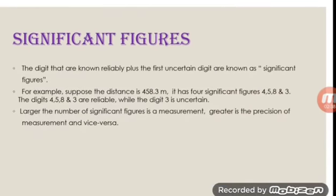Now, the significant figures. The digits that are known reliably plus the first uncertain digit are known as significant figures. For example, suppose the distance is 458.3 m — it has four significant figures: 4, 5, 8, and 3. The digits 4, 5, and 8 are reliable, while the digit 3 is uncertain. Larger the number of significant figures in a measurement, greater is the precision of the measurement, and vice versa.